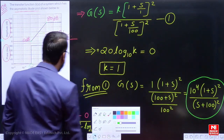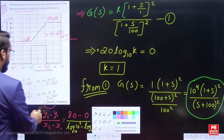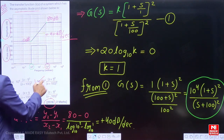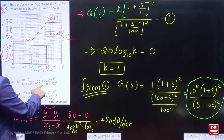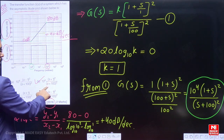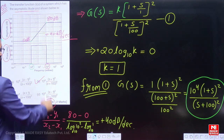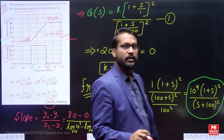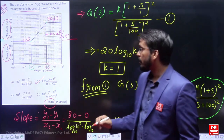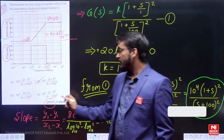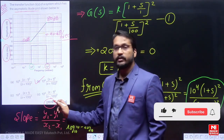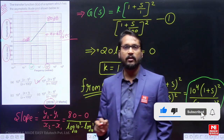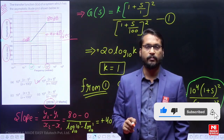This is the answer to the particular question. If you observe clearly, option B is: 10⁴ · (1 + s)² / (s + 100)². So the answer to this question, which was asked in 2016, is option B. Thank you.